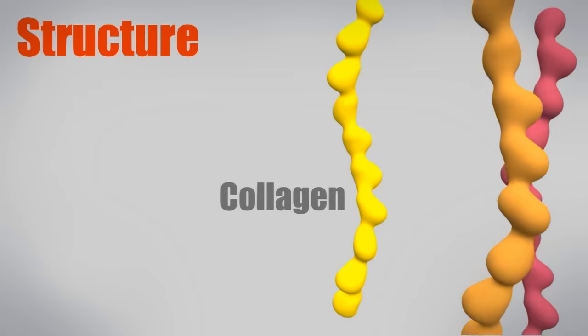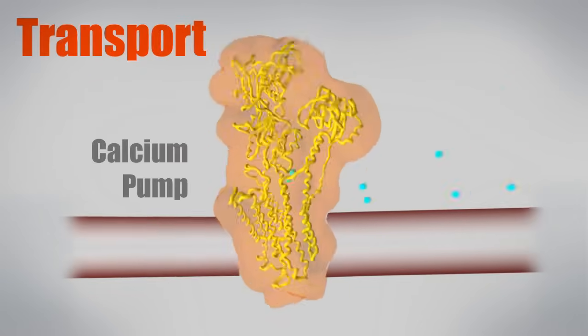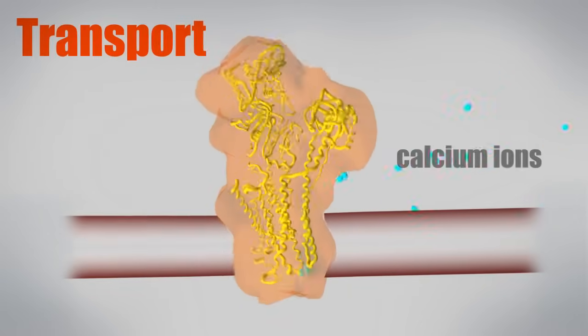Collagen forms a strong triple helix that is used throughout the body for structural support. The calcium pump moves ions across cell membranes allowing the synchronized contraction of muscle cells.